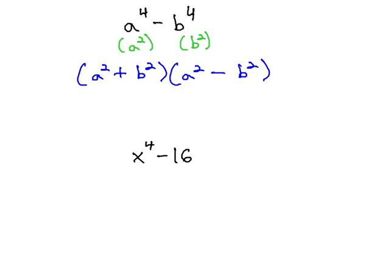However, this problem is not done yet. The first binomial, a squared plus b squared, is a sum of squares. When we're adding, it's going to be prime, and we won't be able to do anything to it.